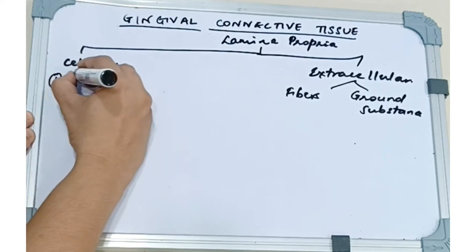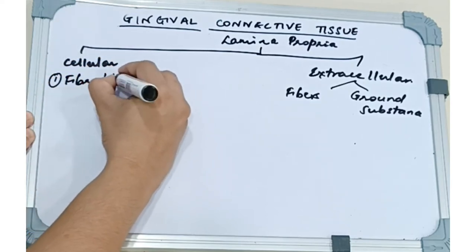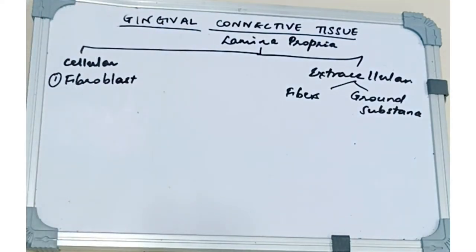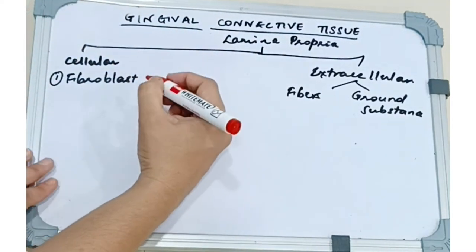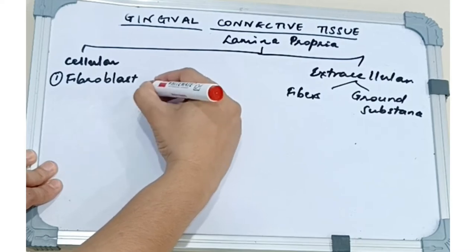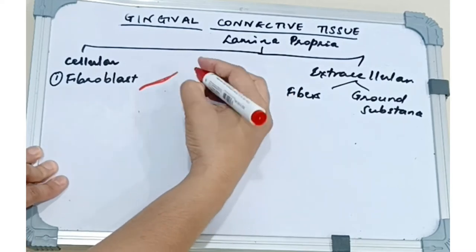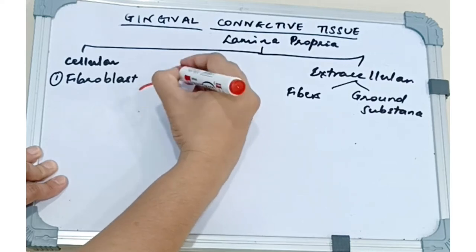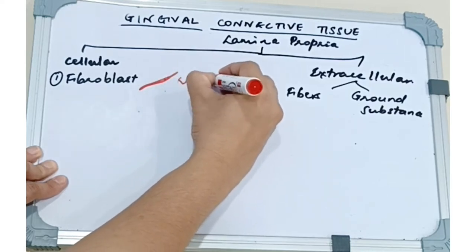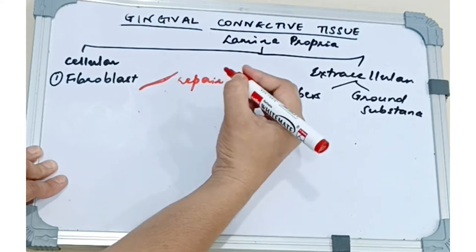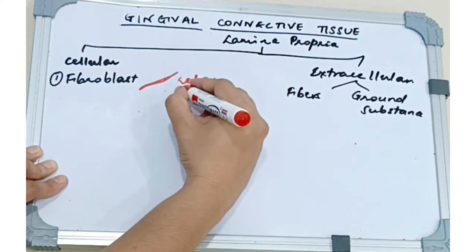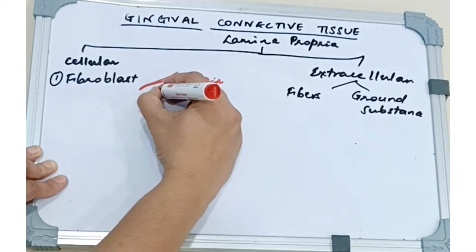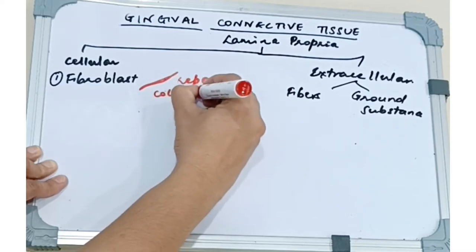First we have the fibroblast. Now this is derived from undifferentiated progenitive mesenchymal cells. It is elongated spindle shape and it has a role in development, maintenance and repair of the gingival connective tissue. So it synthesizes the collagen fibers, elastic fibers, glycoproteins, glycosaminoglycans and is also involved in regulation of collagen degradation.